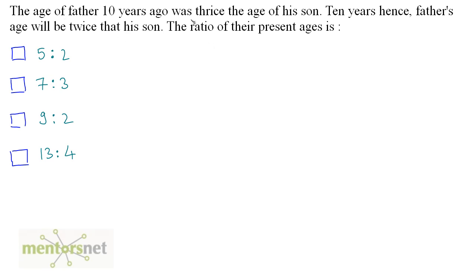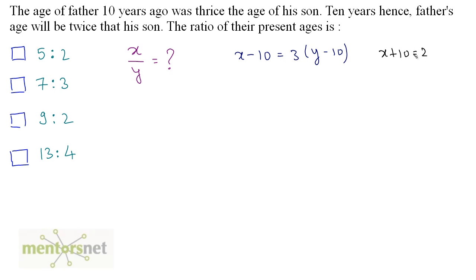The age of father 10 years ago was thrice the age of his son. 10 years hence the father's age will be twice that of his son. The ratio of the present ages is? Let the father's current age and the son's current age be x and y respectively. 10 years ago: x minus 10 equals 3 times y minus 10. 10 years hence: x plus 10 equals 2 times y plus 10. Solving the first equation: x equals 3y minus 20.